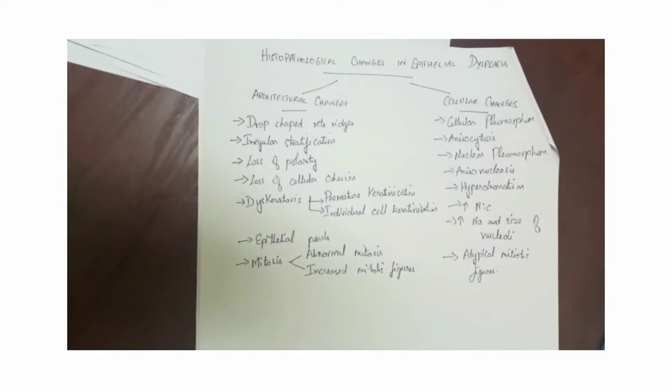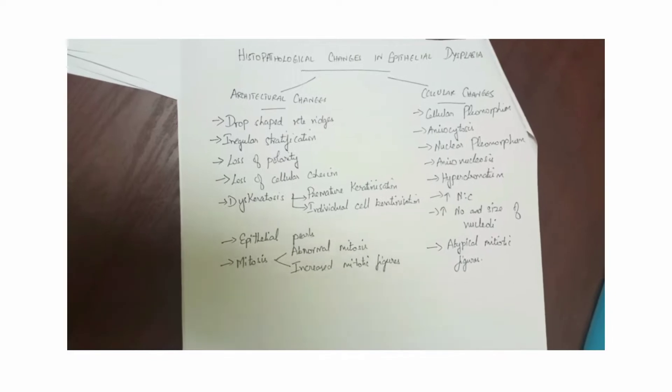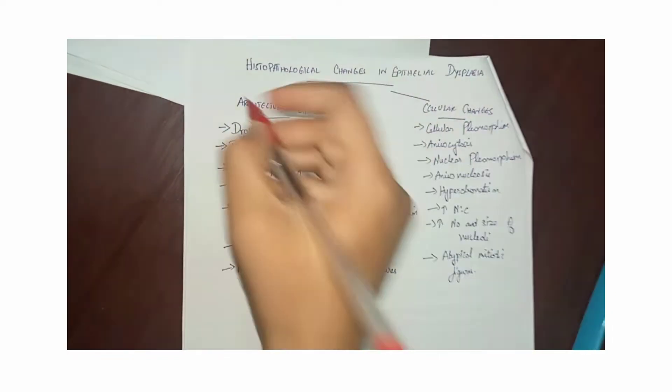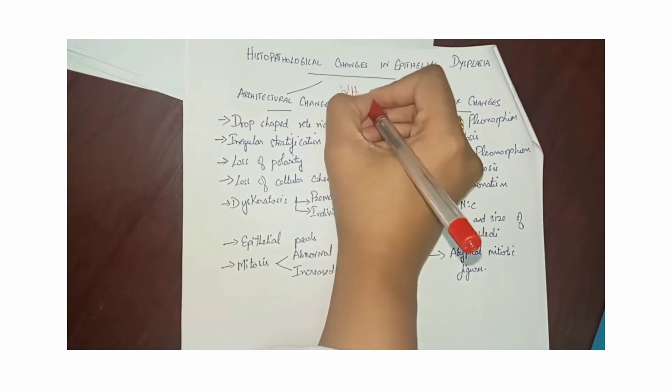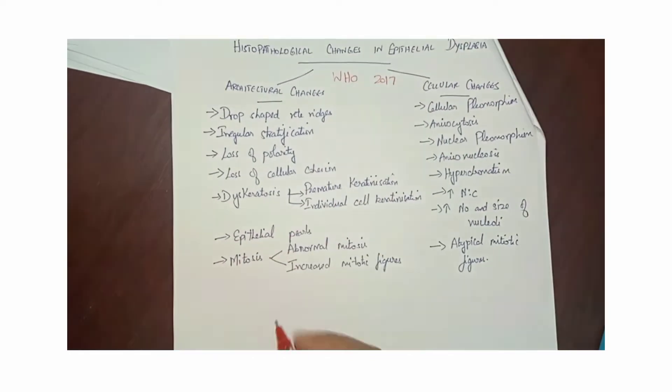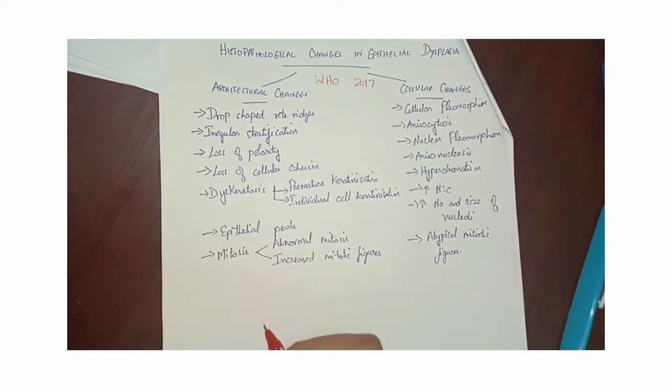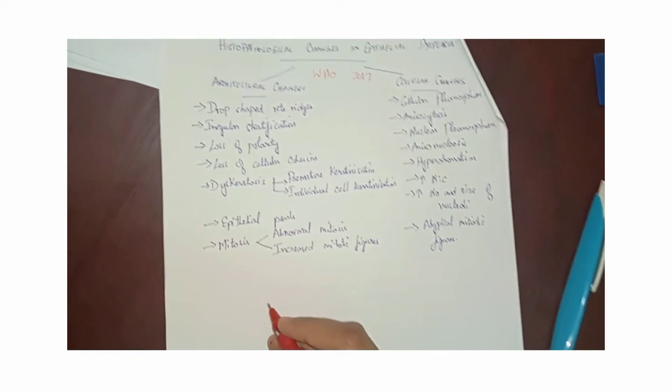Hi, we will see about the histopathological changes in epithelial dysplasia. This is according to the WHO classification in the year 2017. So the histopathological changes can be described under two headings as architectural changes and cellular changes.